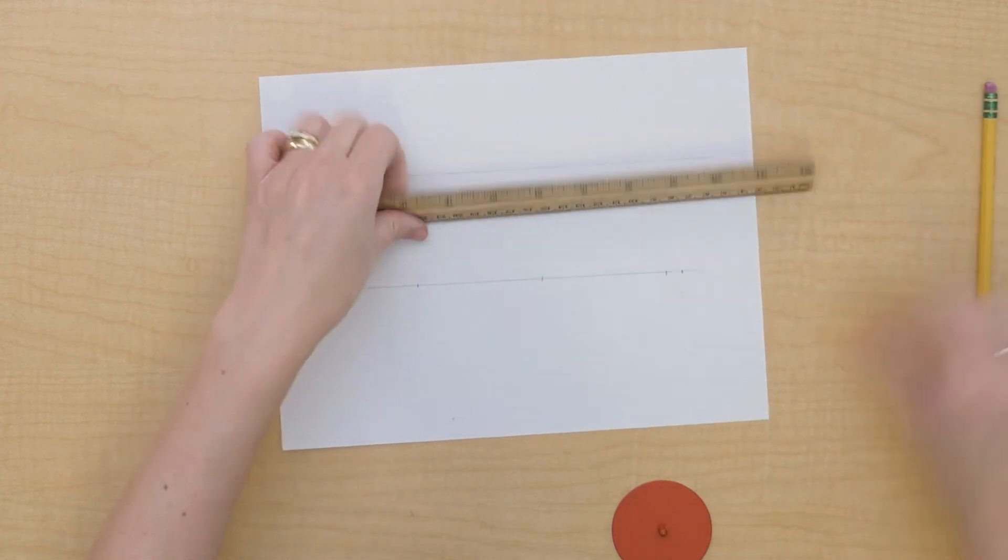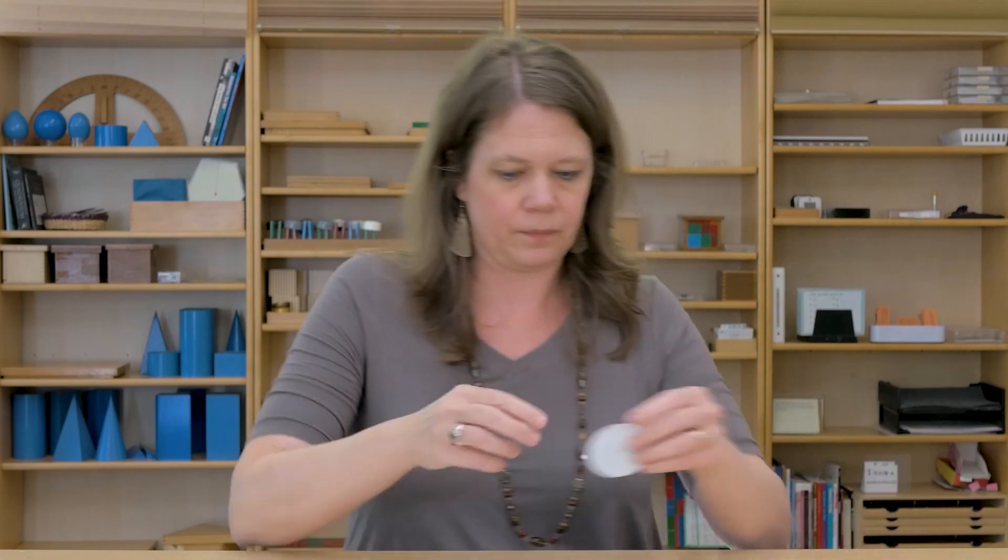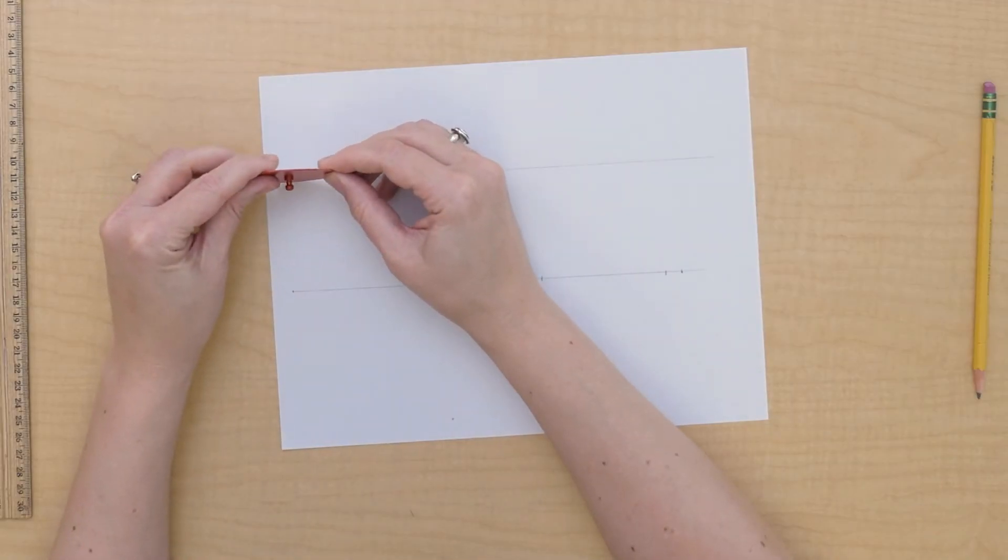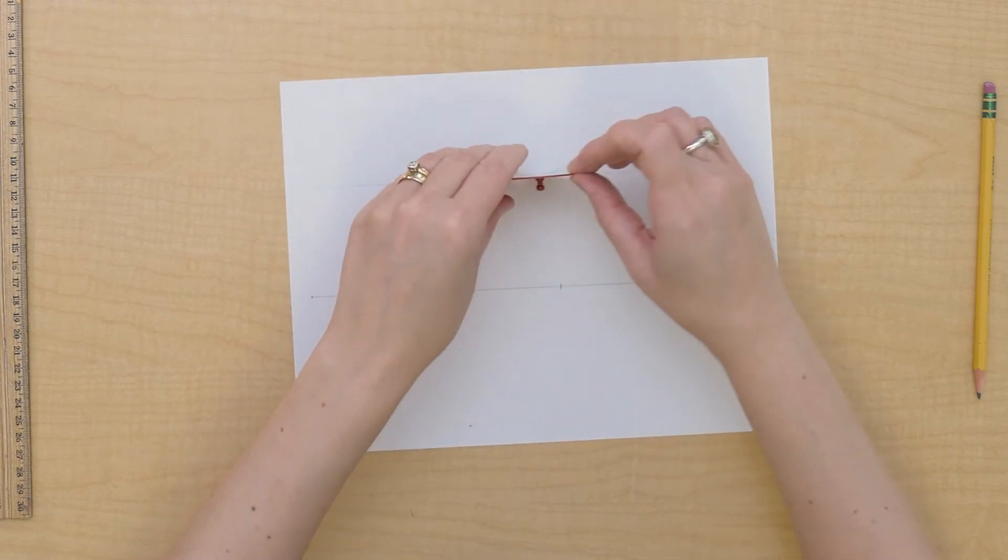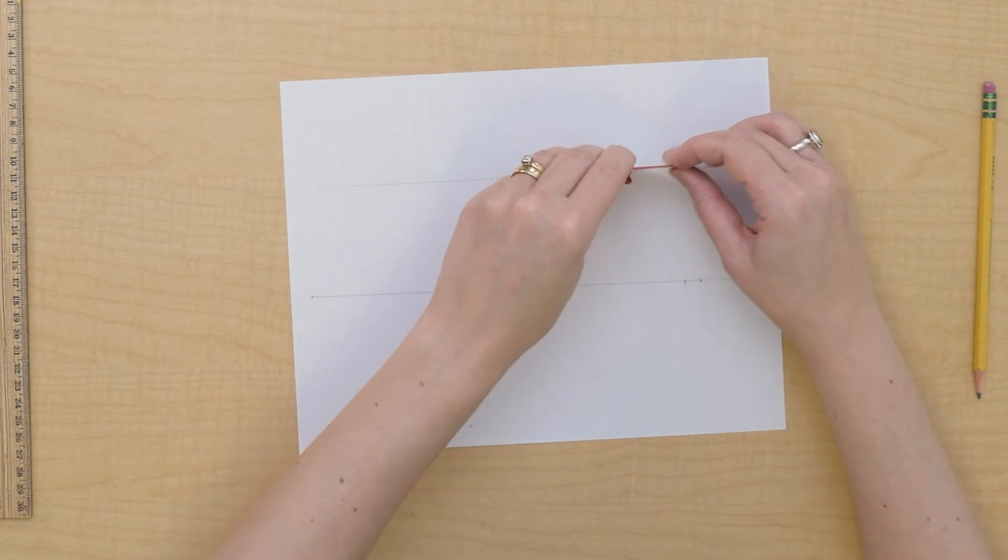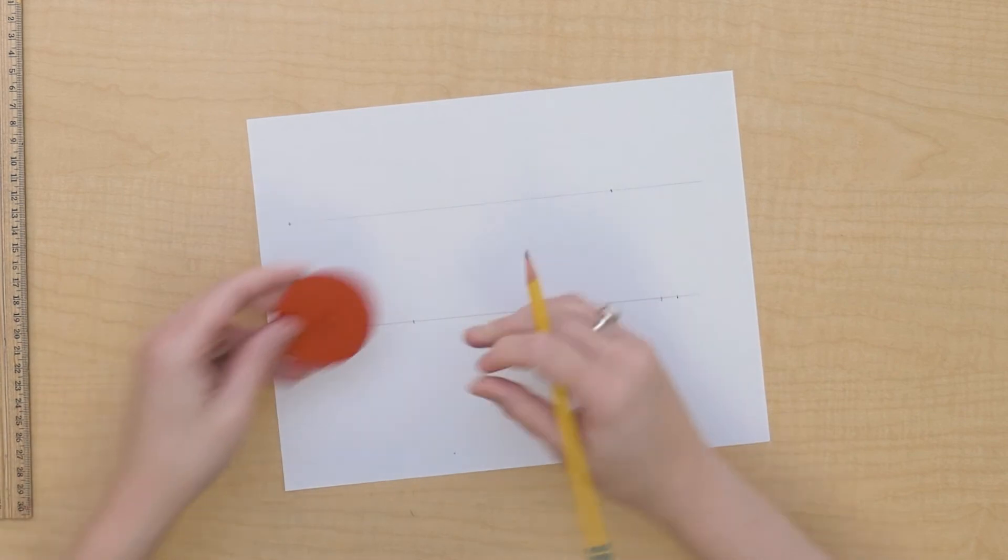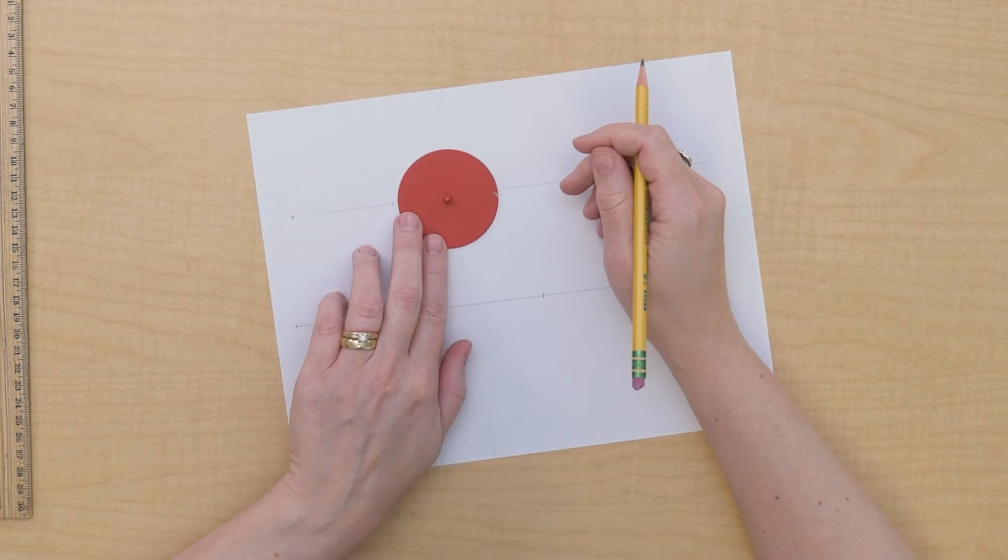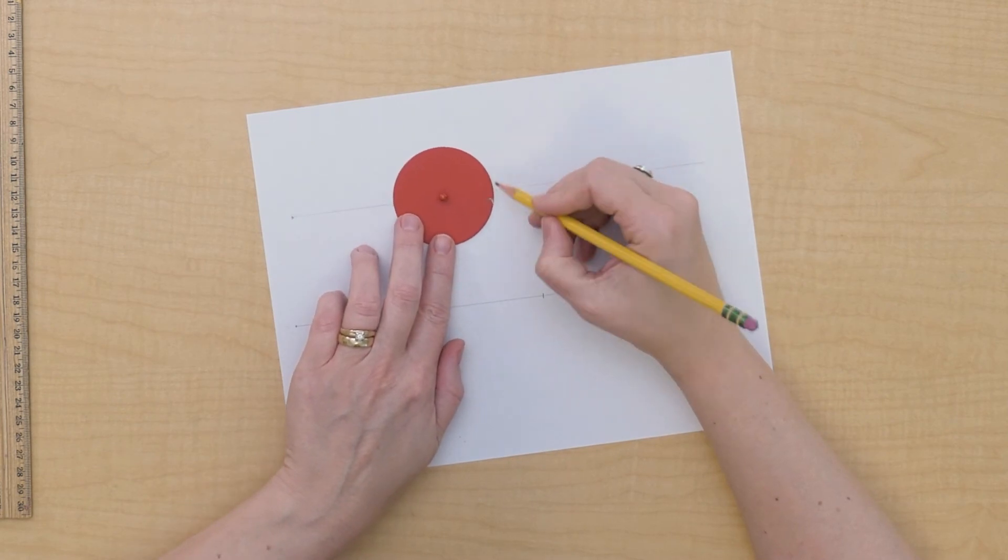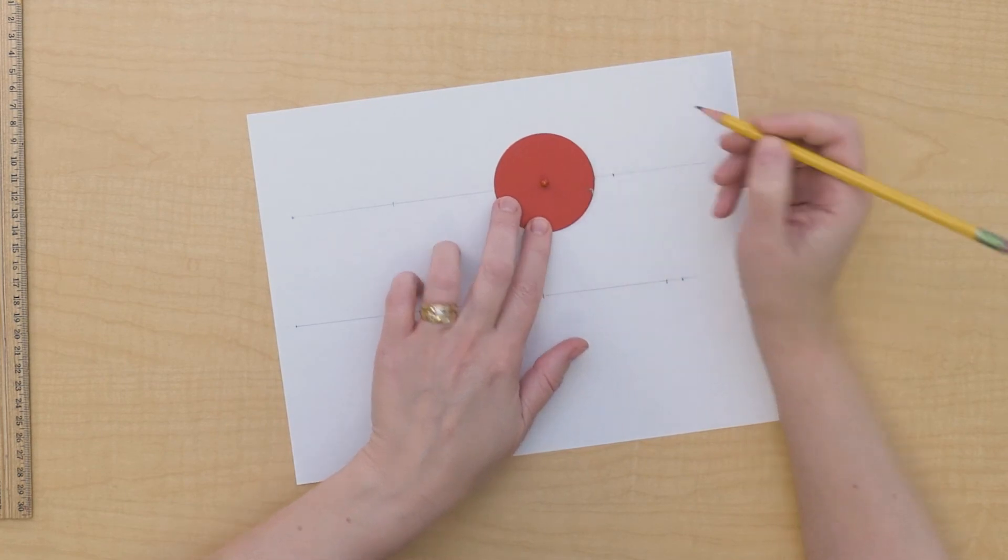I'll draw a line, go ahead and put a mark on my circle, and roll the circumference out. Okay. Let's try this one.